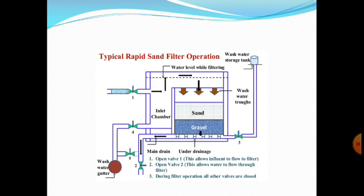This is the example of a rapid sand filter. Water is allowed in from valve 1, which allows effluent to flow to the filter. Opening valve 2 allows water to flow through the filter. During filter operation, all other valves are closed. The effluent enters the filter and passes through sand and gravel layers, where impurities are removed. The filtered water is then allowed out from the filter outlet.